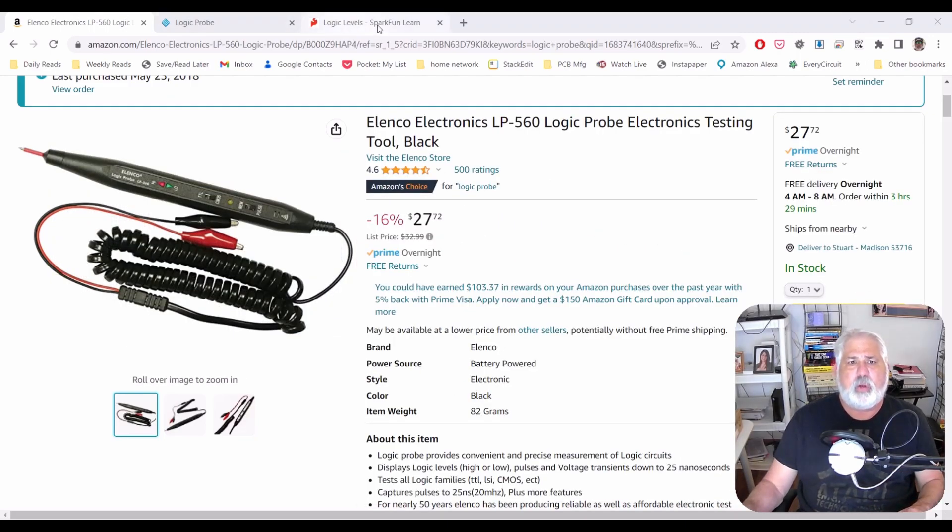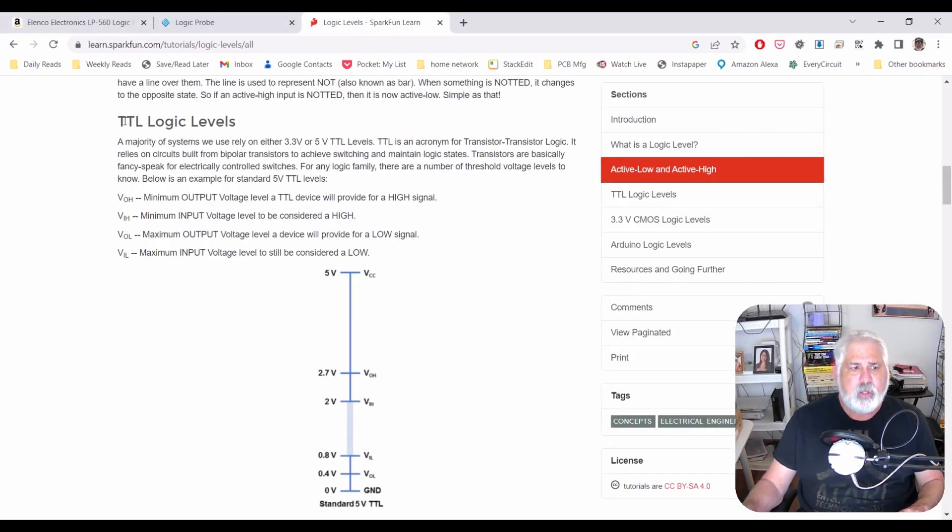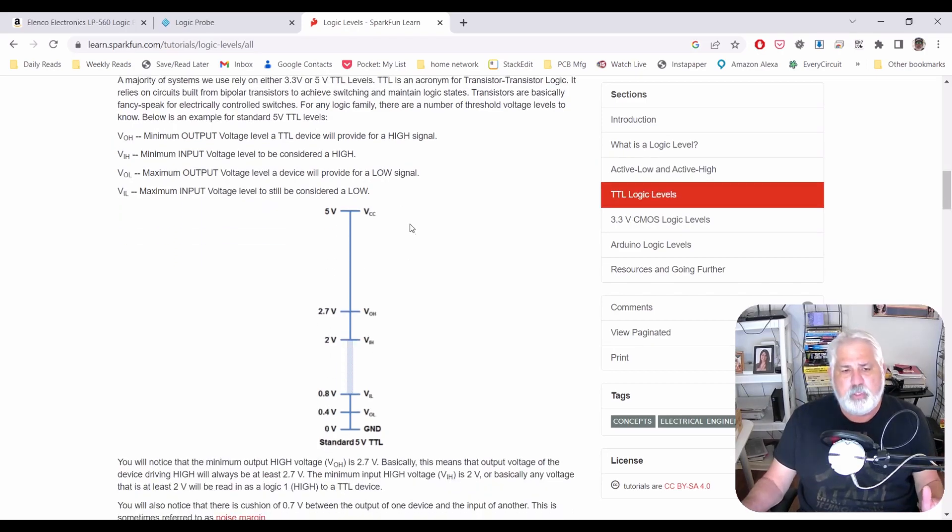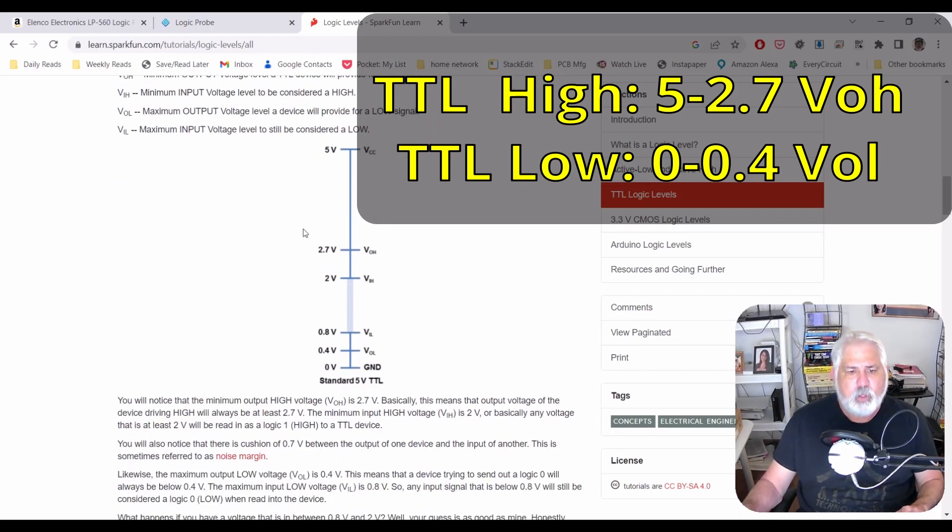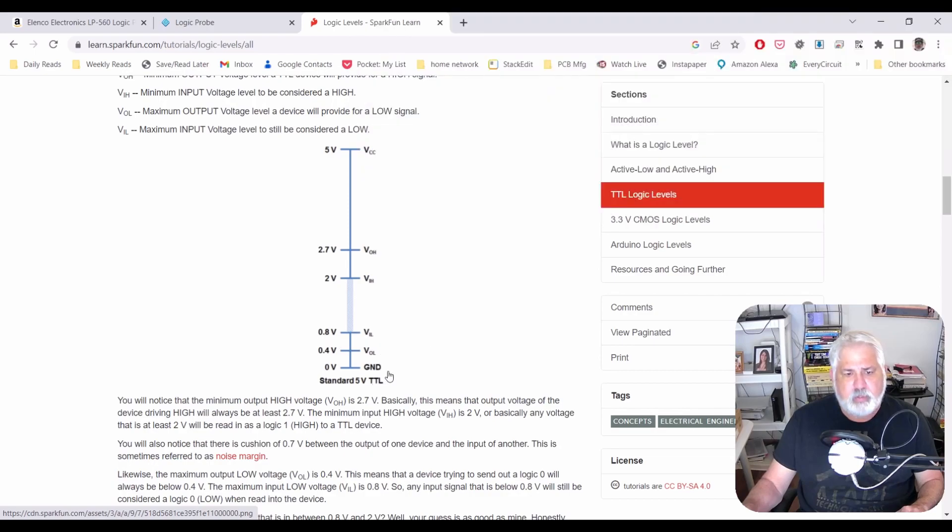Let's take a look real quick at logic levels on the SparkFun page. TTL logic levels, when someone mentions TTL to you, think 5 volts. And basically what you're looking at here is a high voltage between 2.7 volts and 5 volts. So when you set that switch on the Logic Probe, you're telling it this is what I'm looking at. So this is the window that represents a high and this is the window that represents a low. A low voltage, 0.8 to 0.